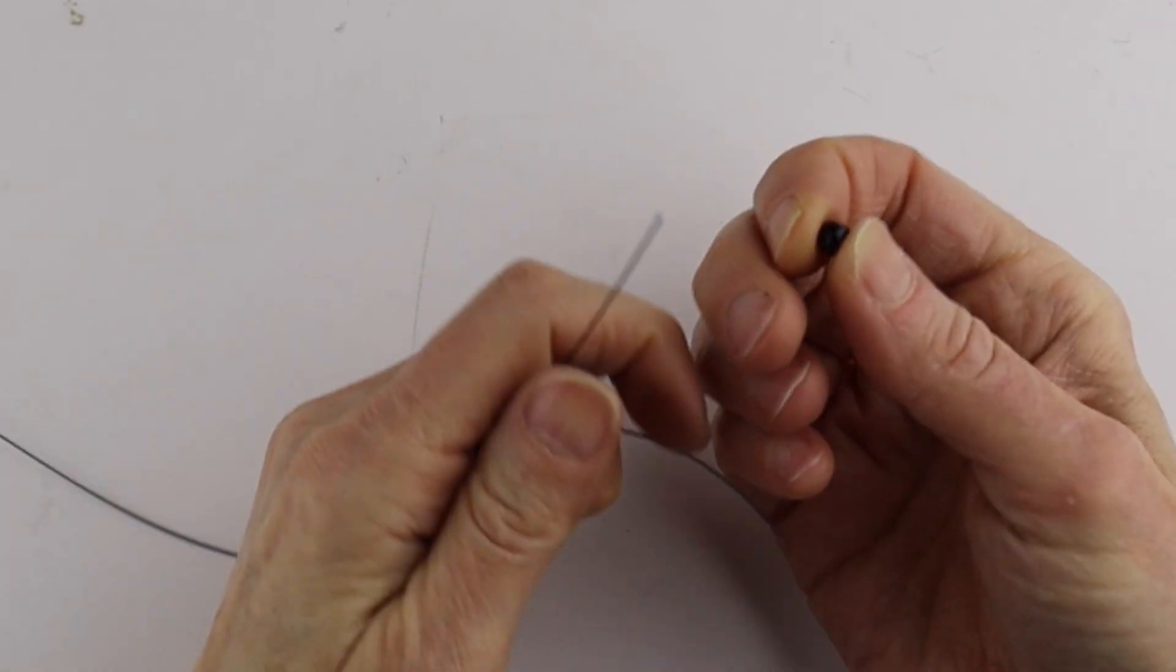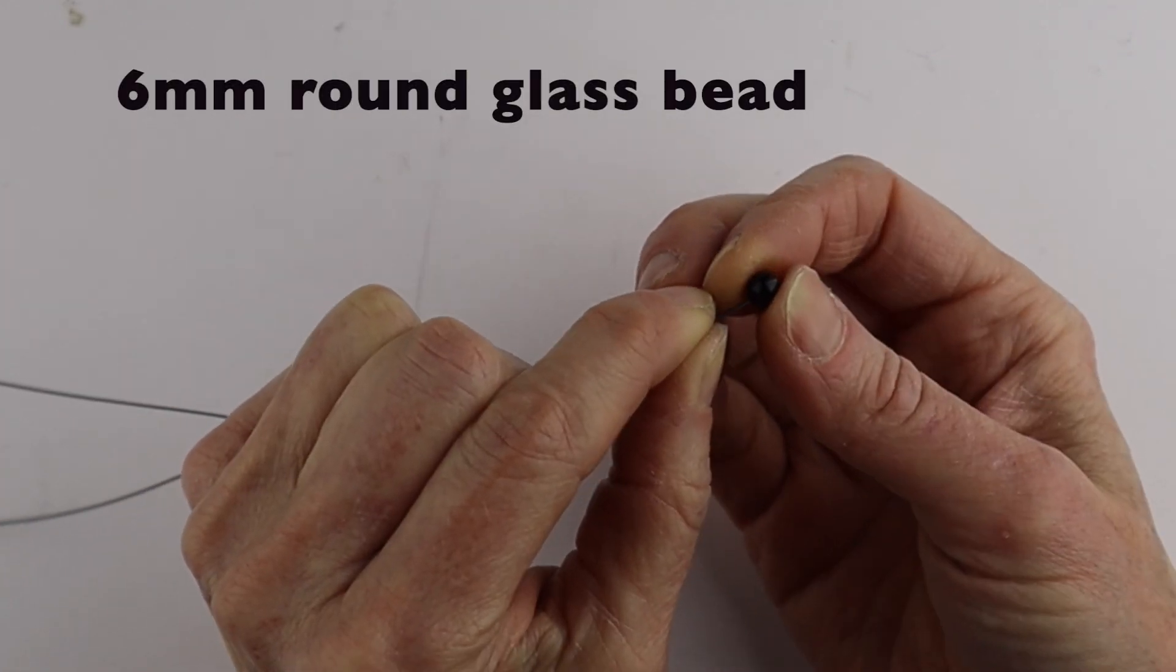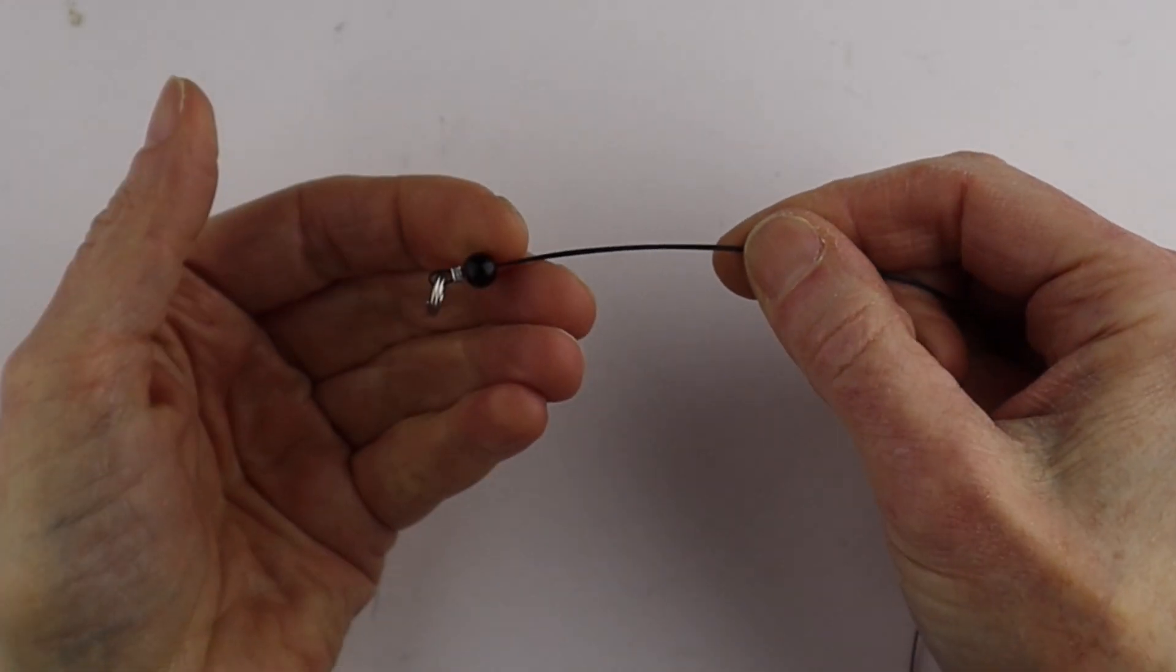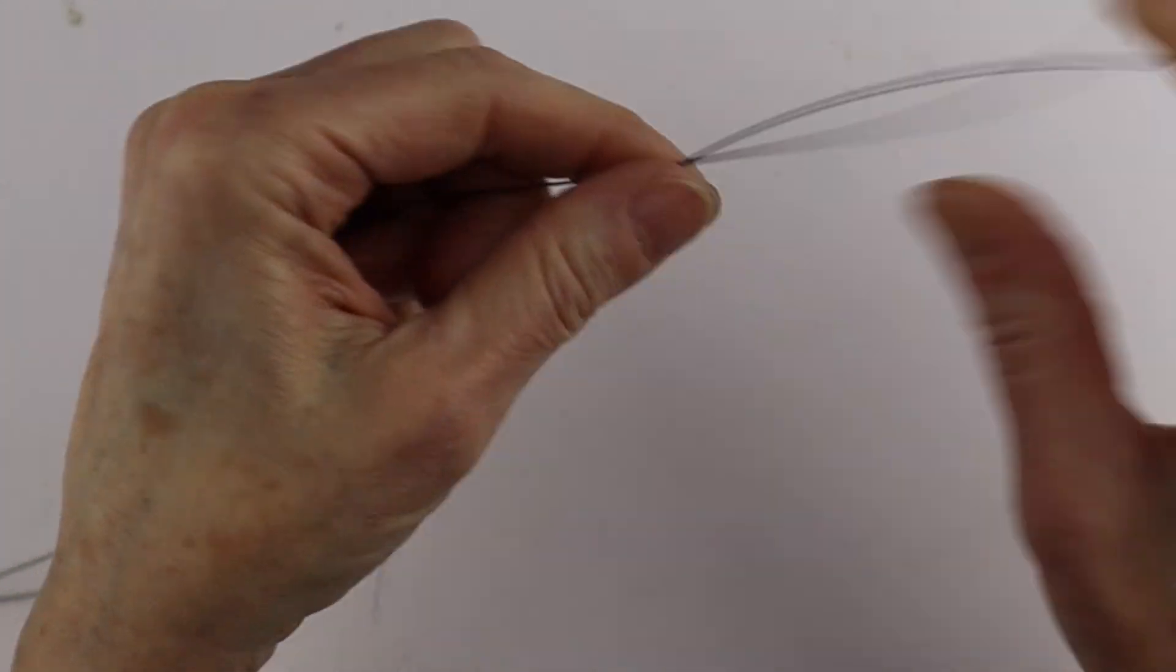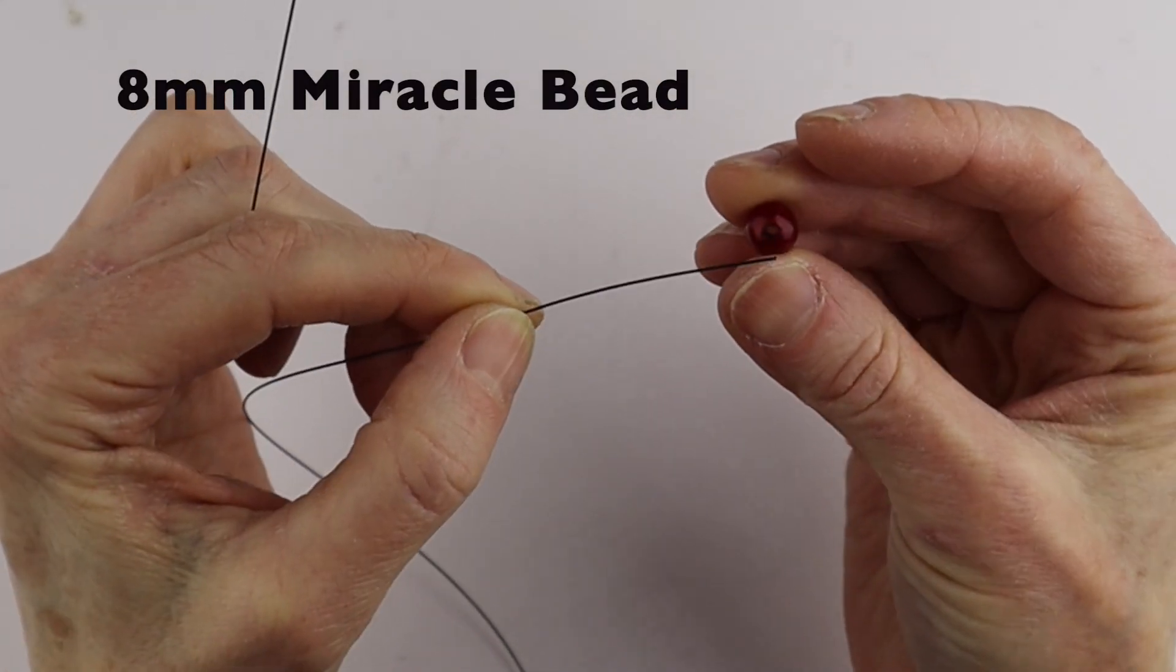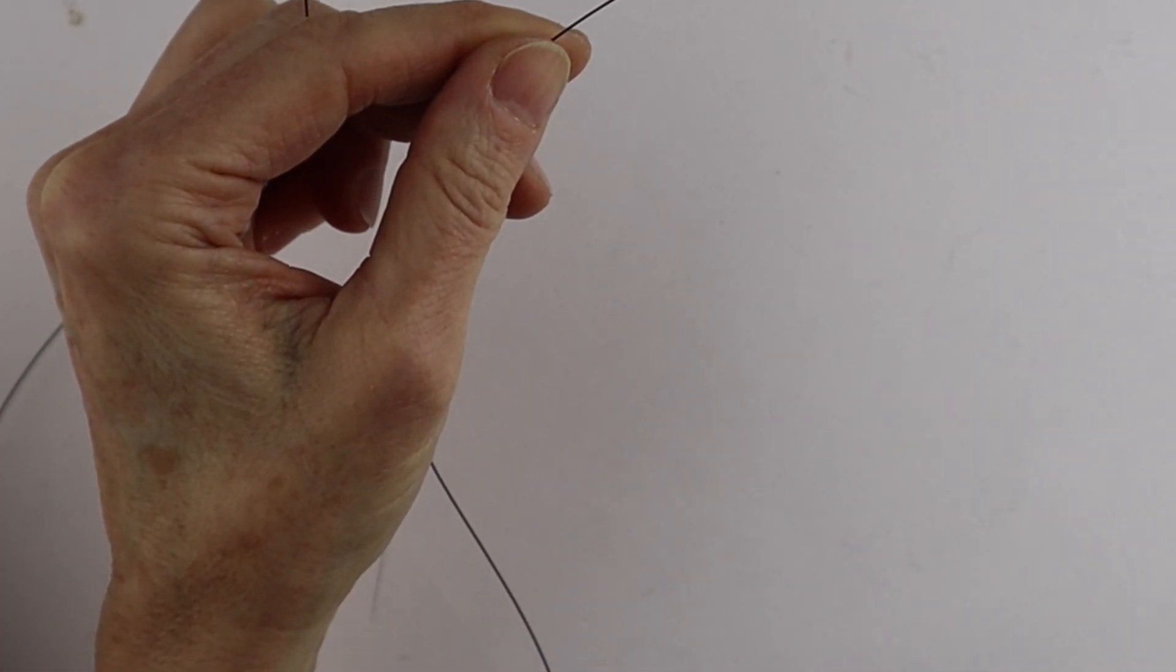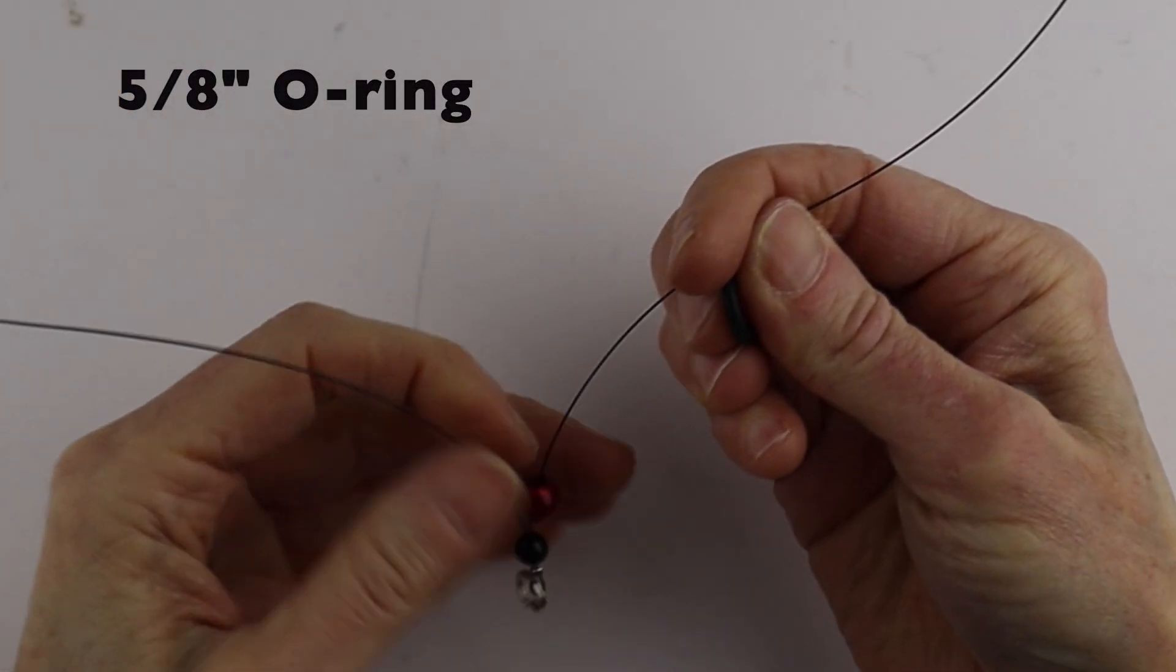Take one of the 6 millimeter beads and put both ends of the Tiger Tail through it, letting it go all the way to the end. Open them up, put a red bead on there, then get one of the O-rings and bring it down to the end.